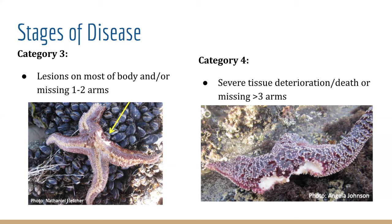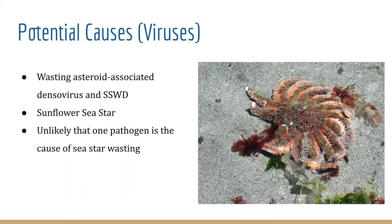Lastly, category 4 is the most severe with tissue deterioration and it's missing more than three of its arms. We can see that Seastar wasting disease is pretty brutal, so what do researchers think caused this deadly disease? Researchers have yet to find a specific cause, but there has been evidence for a variety of reasons that can contribute to Seastar wasting.